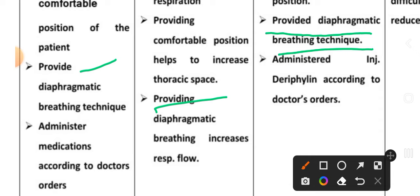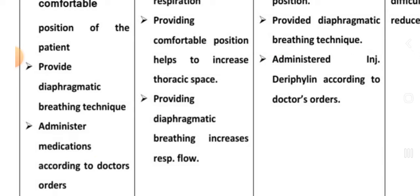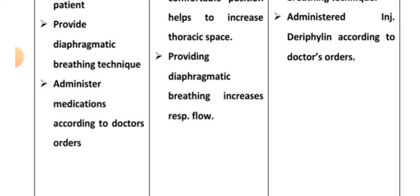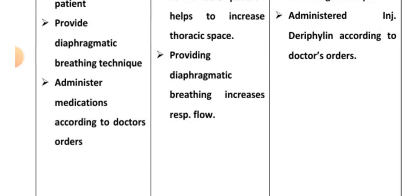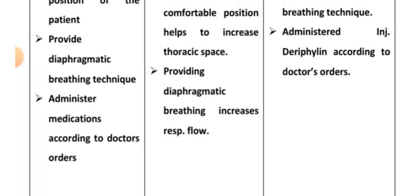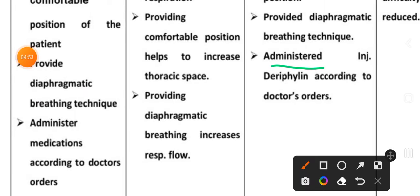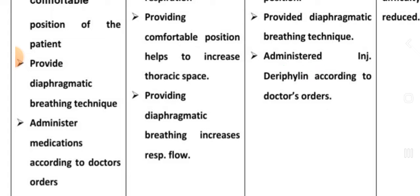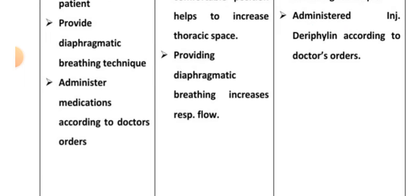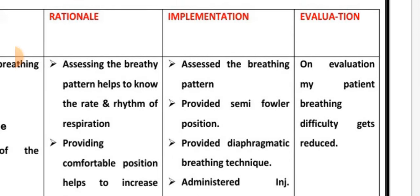Implementation: provide diaphragmatic breathing to the patient. Fourth intervention: administer medication according to the doctor's order. Implementation: administer aminophylline (bronchodilator) as per the doctor's prescription.